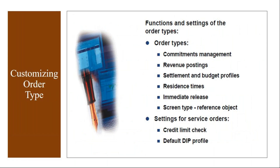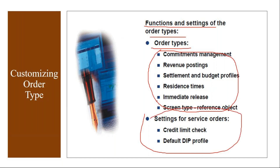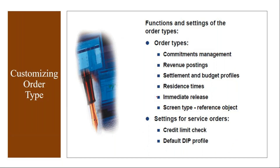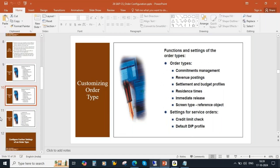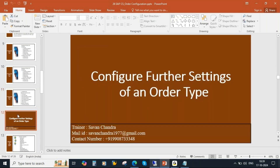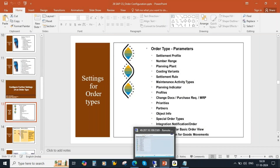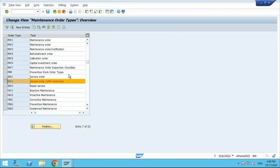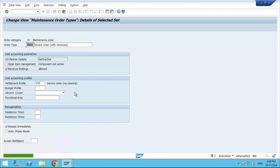The functions and settings of order types include: availability check, priority types, status profile, partner determination procedure, scheduling parameters, field selection, and confirmation parameters — all these settings need to be done when you create a new order type. I am in the S/4HANA system. I will take SM02, copy it, and use it to create a new order type.